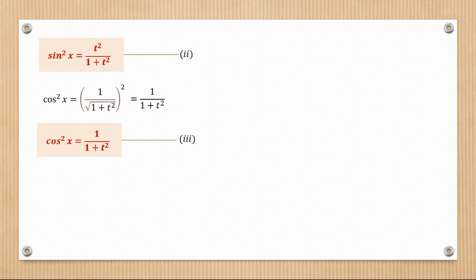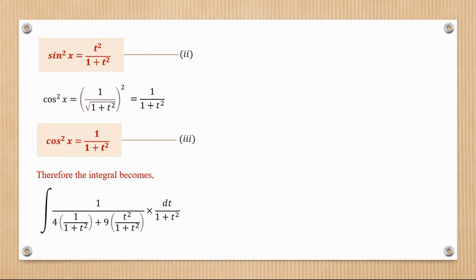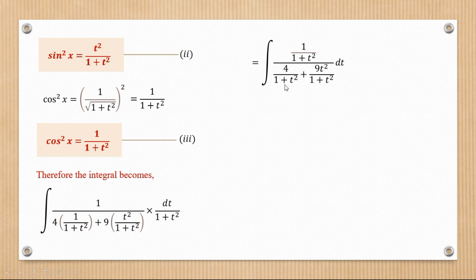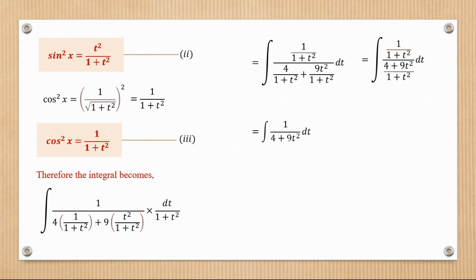Now that we know sin squared x and cos squared x in terms of t, we replace them back in the integral. Multiplying through, 4 cos squared x gives 4 over 1 plus t squared, and 9 sin squared x gives 9t squared over 1 plus t squared. The denominators are the same, so we combine to get 4 plus 9t squared over 1 plus t squared. The 1 plus t squared factors cancel, leaving the integral of 1 over 4 plus 9t squared.